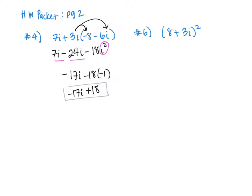You might start to notice that every time you see an i squared, all you're doing is plugging in negative 1, which basically just changes the sign of that term. So if you see an i squared, you can just flip the sign right then and there without showing that you're plugging in negative 1 — that shortcut is fine.